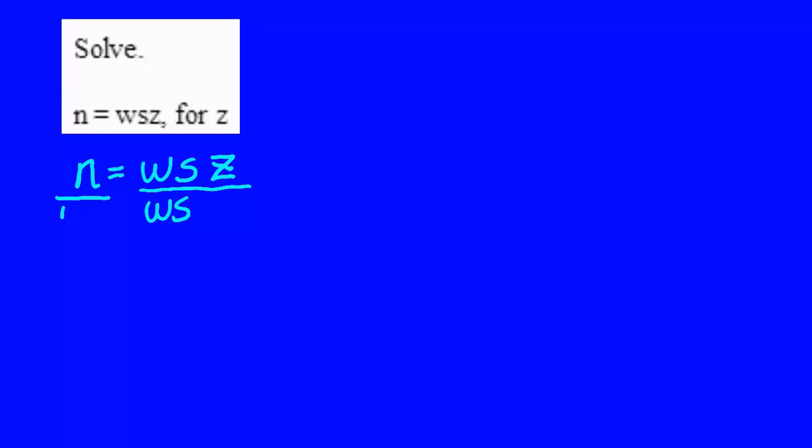For that reason, since w and s are multiplied by z, we're going to divide both sides of this equation by w and s. What that will give us on the left is n over ws, and on the right, w over w is 1, s over s is 1, times z, which means z equals n over ws. And that's what it's all about.